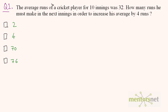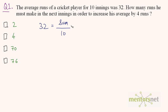We know the average runs of the cricket player for 10 innings is 32. So 32 equals the sum of runs for 10 innings divided by the number of innings, which is 10. Therefore, the sum of runs for 10 innings is equal to 320.